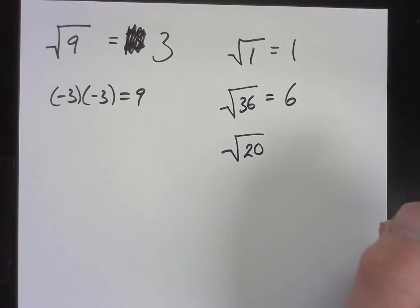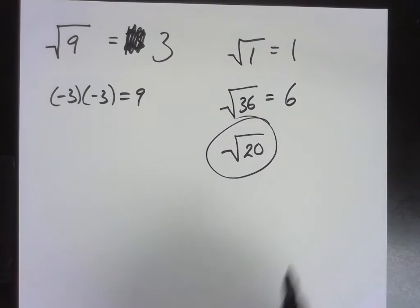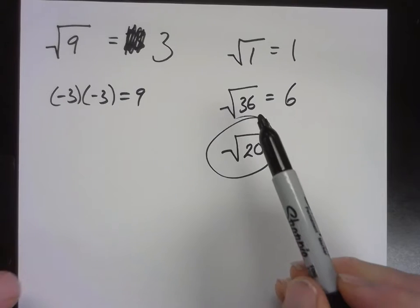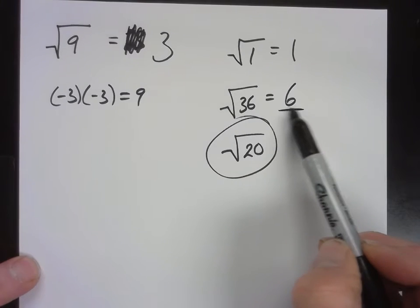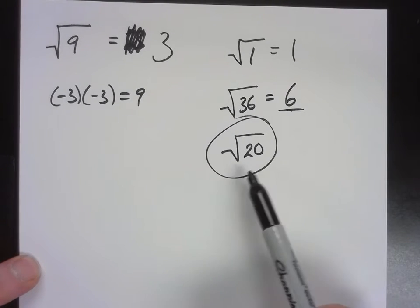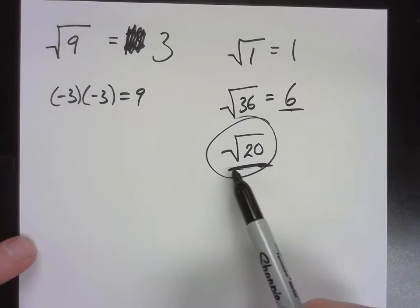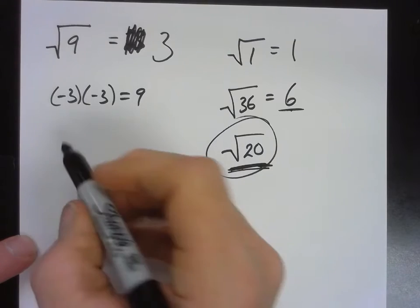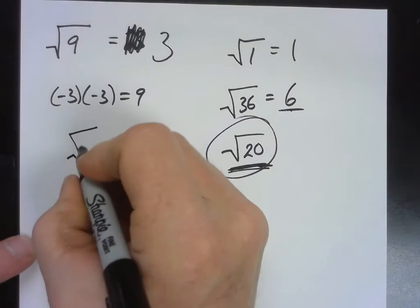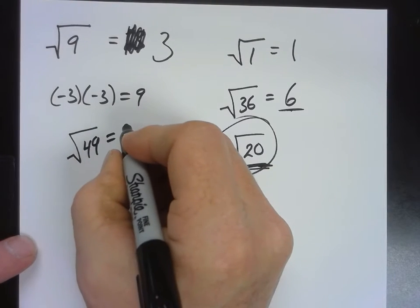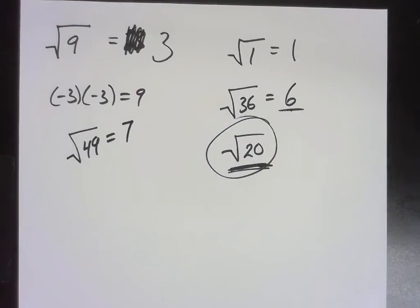There's no integer answer for √20 — it's actually an irrational number, 4-point-something. Not all roots are nice whole numbers; some are irrational and harder to deal with. You won't usually be asked something like that — you'll get things like the square root of 49, which is 7. But you will also get some cube roots.